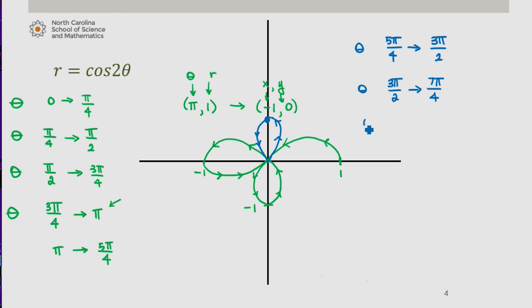And when theta finally increases from 7 pi over 4 to 2 pi, cosine of 2 times 7 pi over 4 is the 0 here. 2 pi in place of theta gives me r being 1. So I come back, connect.